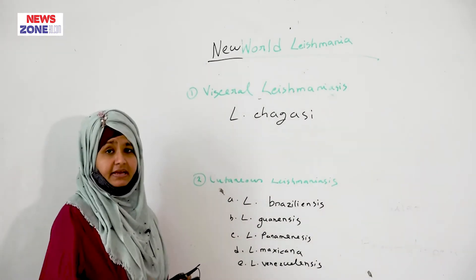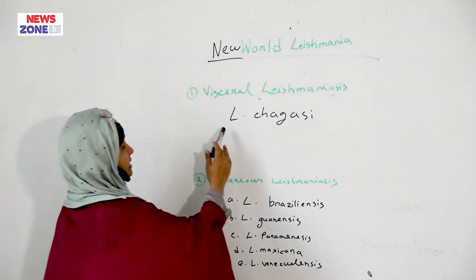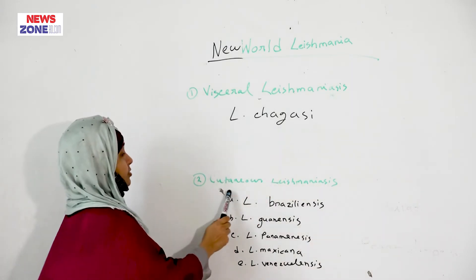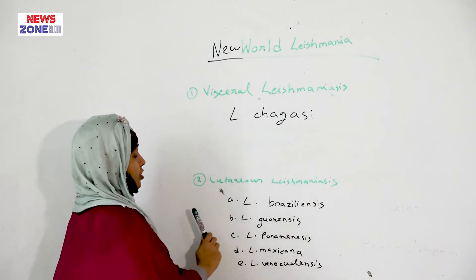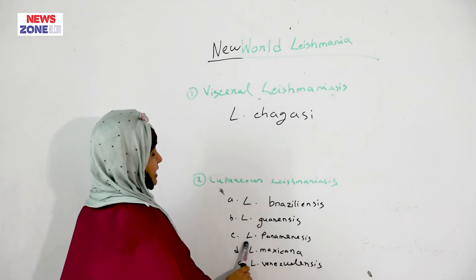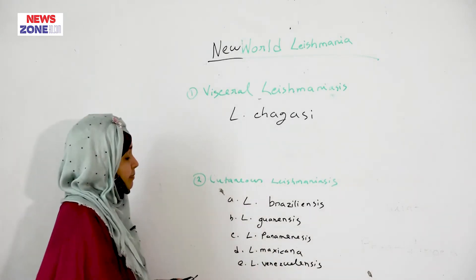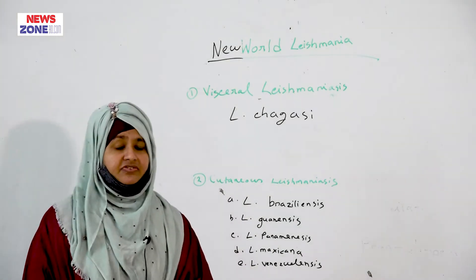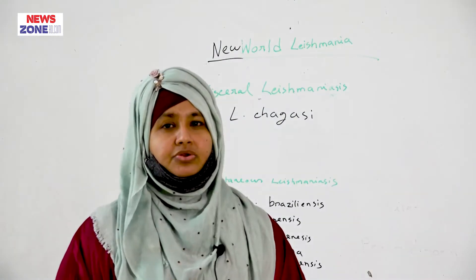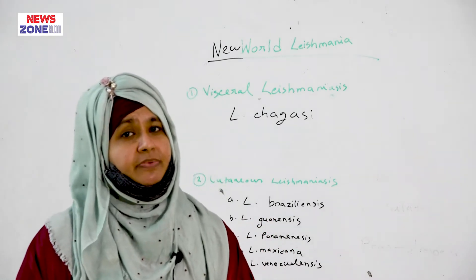Now, New World Leishmania. In the classification of New World Leishmania, visceral Leishmaniasis is caused by Leishmania chagasi, and cutaneous Leishmaniasis is caused by Leishmania braziliensis, Leishmania guianensis, Leishmania panamensis, Leishmania mexicana, and Leishmania venezuelensis. That is all about the classification of Leishmania.